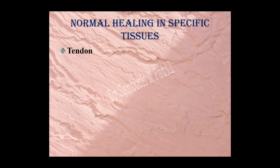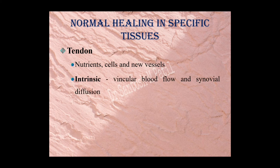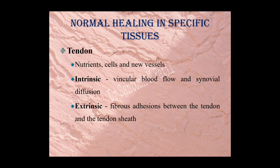For tendon, repair starts mainly because of nutrition and new vessel formation. Nutrition to the tendon occurs via two mechanisms: intrinsic — venicular flow and synovial diffusion — and extrinsic — fibrinous adhesion between the tendon and tendon sheath. This process is very slow, which is why tendons are the slowest-healing structures. Tensile strength usually takes three to six weeks.